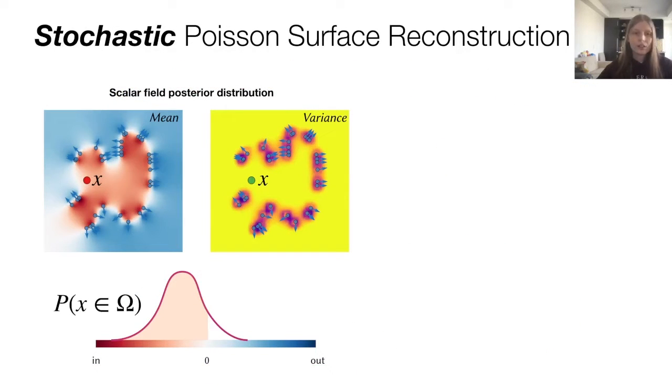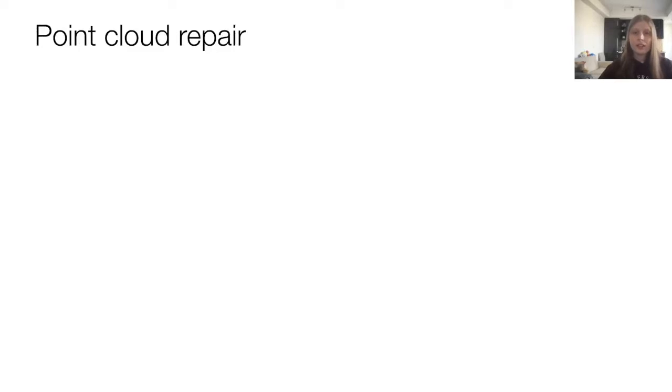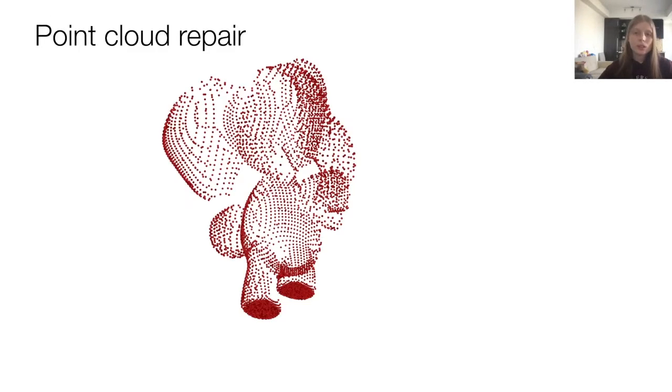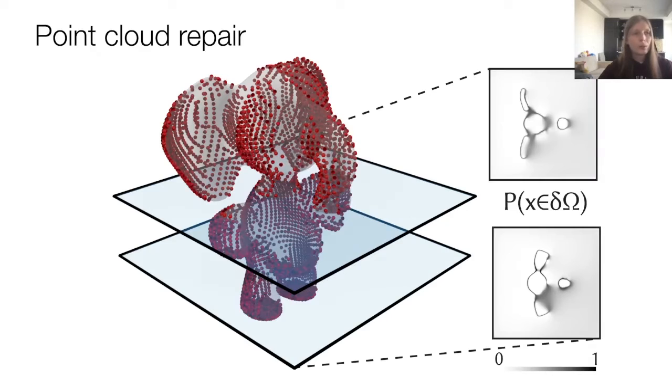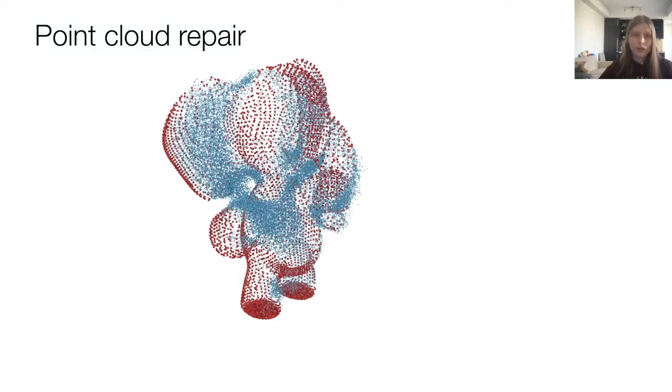There are other statistical queries that we can ask. For example, we've seen how useful it is to compute a point's likelihood of being inside the shape. We can also compute this other quantity, which measures how likely it is to be on the surface of the shape. Plotted for every point in the plane, it looks something like this. This quantity is useful in cases like this one, where we have an incomplete point cloud of an object, and we can use the probabilities and sample according to them to sample new surface points and complete the point cloud.